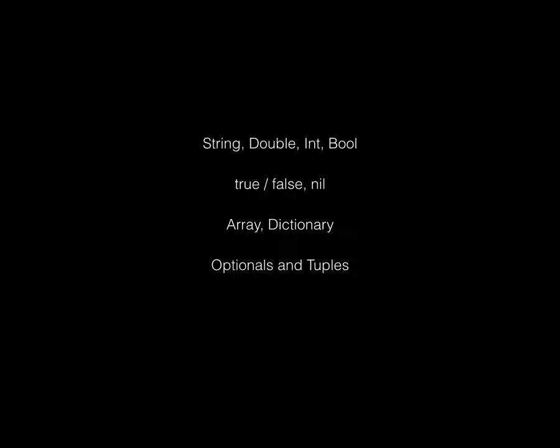We've also got some very confusing but very useful things once you get the hang of them: optionals and tuples. Tuples are very interesting — you might be used to the fact that every time you wanted to return more than one piece of data you had to construct a structure or model. Now in Swift you can return as many values as you want in one return without building a data object or dictionary. When you receive them you can access them in a really simple notation.